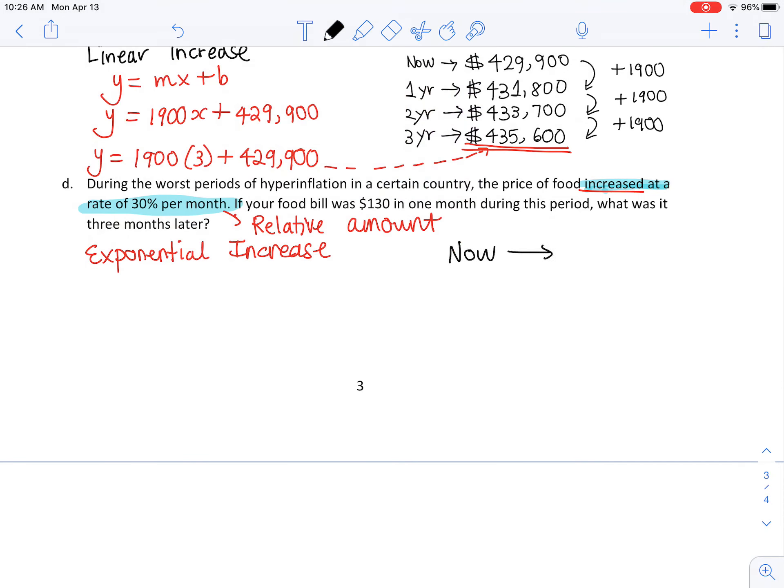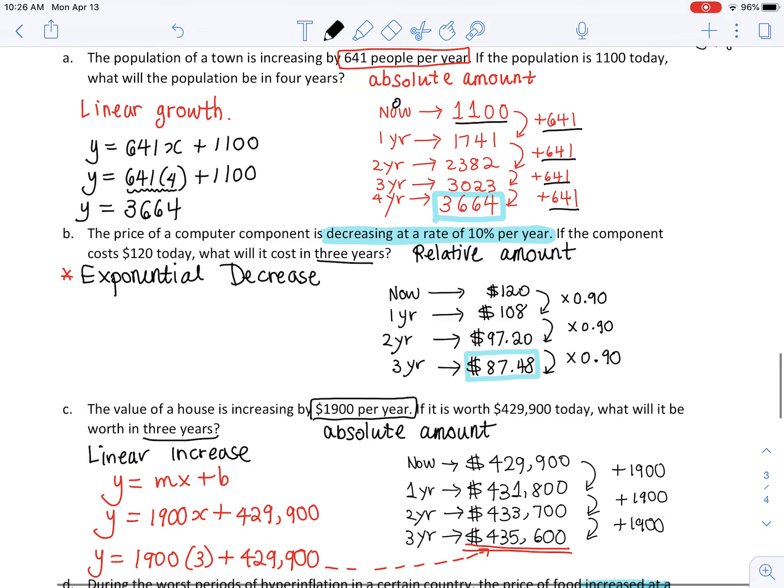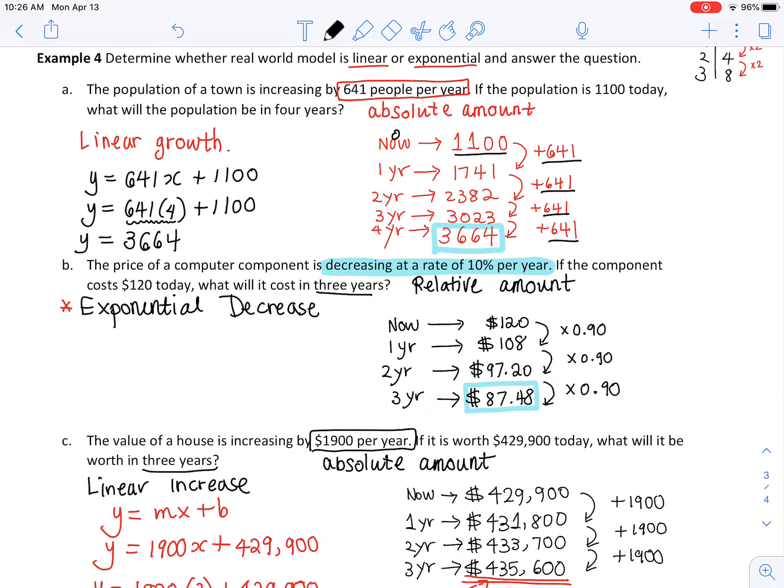I say increase because the food price is going up. If your food bill now is $130 in one month during this period, what was it three months later? What I'm going to do is start from now, and then I'll do one month later, two months, and then three months. Remember, for linear functions we were adding or subtracting the same amount. The two examples that I did today happen to be both increasing, so they were adding, but it can be subtracting too if it's linear decrease.